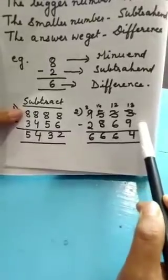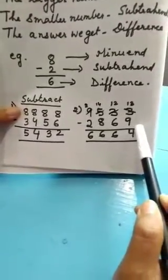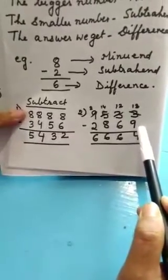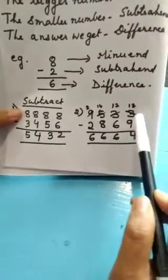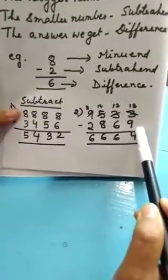Now, 3 minus 9. Now, you tell me, will it go? Can we subtract 3 from 9? No. We cannot subtract because 3 is the smaller number and 9 is the bigger number.